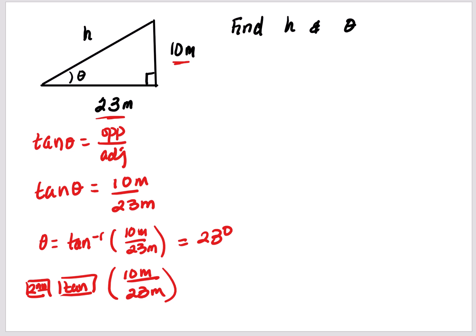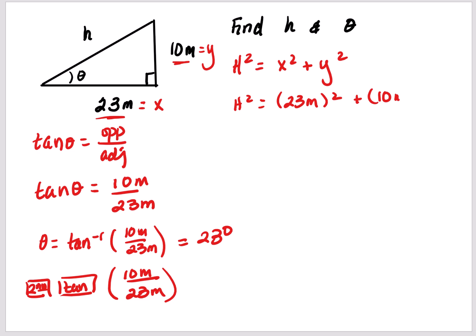Now I can find the hypotenuse. There are multiple ways — I could use cosine, sine, or Pythagorean theorem since this is a right triangle. Using Pythagorean theorem: h squared equals x squared plus y squared. So h squared equals 23 meters squared plus 10 meters squared. After that, take the square root — you should get approximately 25 meters.